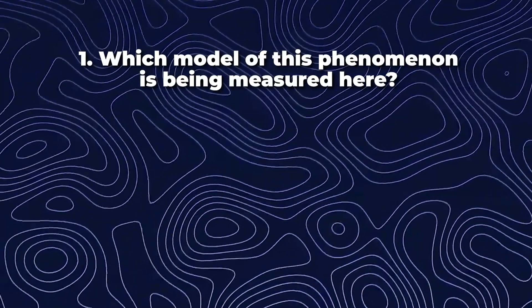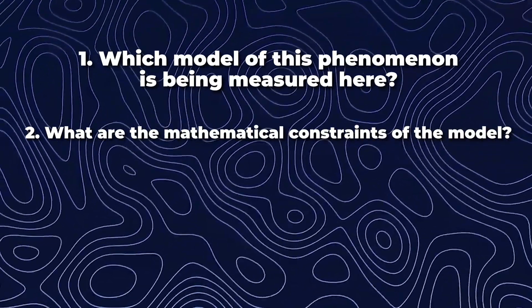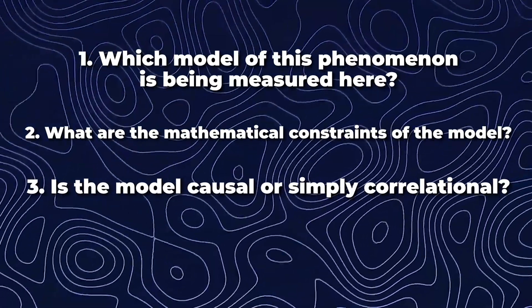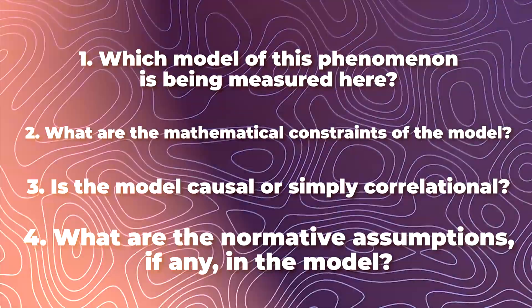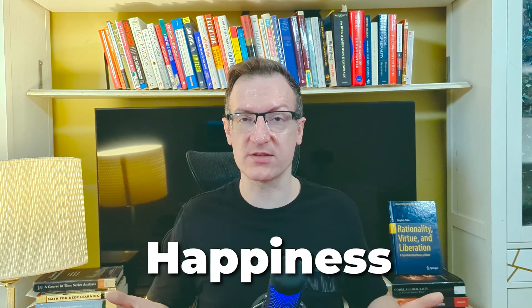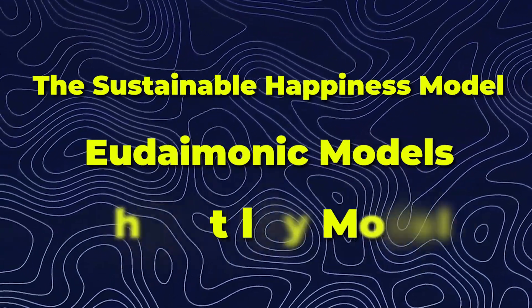One: which model of this phenomenon is being measured here? Two: what are the mathematical constraints of the model? Three: is the model causal or simply correlational? And four: what are the normative assumptions, if any, in the model? For the sake of example, we'll use the concept of happiness. Happiness is a great concept because people have been debating its nature for millennia. There are lots of useful models for measuring happiness, such as the sustainable happiness model, eudaimonic models, the utility model, and researchers have come up with various metrics such as the Gini coefficient, quality adjusted life years, and gross national happiness to measure happiness in economic contexts.